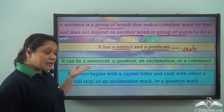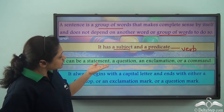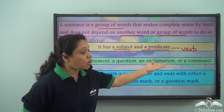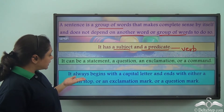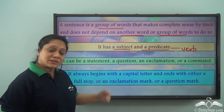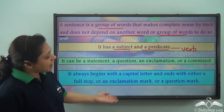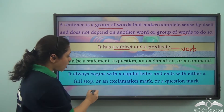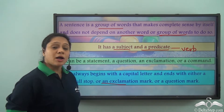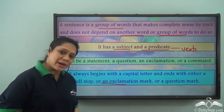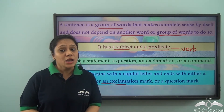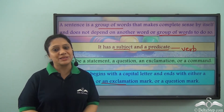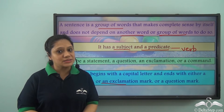A sentence can be a statement, a question, an exclamation, or a command. It always begins with a capital letter and ends with either a full stop, an exclamation mark, or a question mark. Today we shall learn about a particular type of sentence in detail.